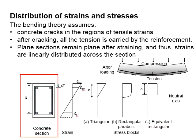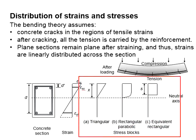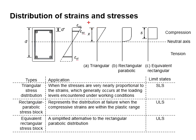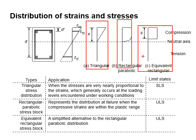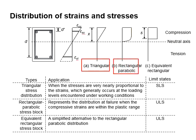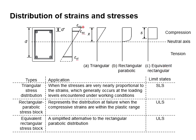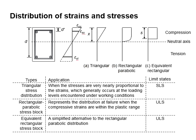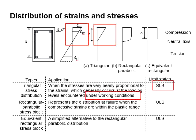From the diagram here, this represents the typical cross-section of the concrete beam, this represents the strain response, and this represents the stress response of the cross-sections. There are three stress blocks: the triangle, the rectangular parabolic, and the equivalent rectangular stress block. The triangular stress block represents the service limit state of the sections, where the stress is nearly proportional to the strain, which generally occurs at the loading level encountered under working conditions.